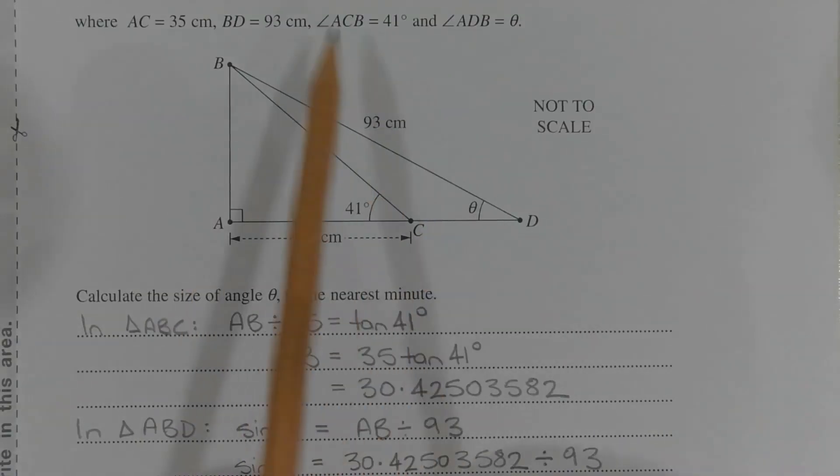In this diagram, side AB is common to right angle triangle ABC and right angle triangle ABD. Now in triangle ABC, tan 41 degrees equals opposite over adjacent. So AB divided by 35 equals tan 41 degrees. Multiplying both sides by 35 to make AB the subject, we get AB equals 35 times tan 41 degrees, which equals 30.42503582.